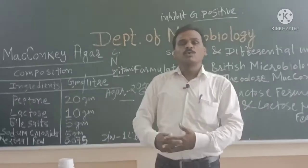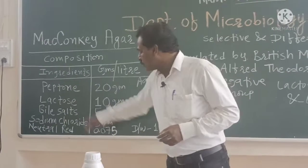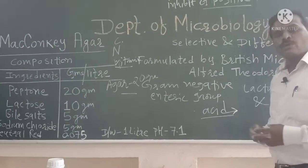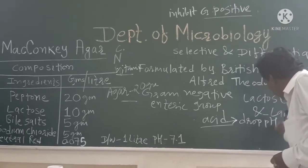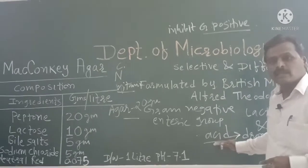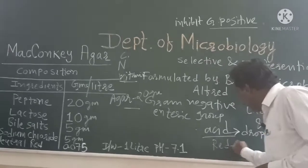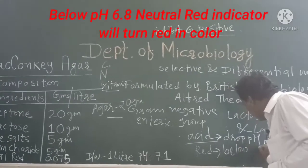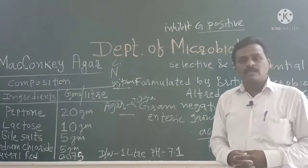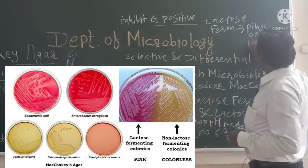When gram-negative bacteria grow onto MacConkey's Agar, lactose fermenter bacteria ferment the sugar lactose, metabolize it, and produce acid. Lactose fermenters produce acid by fermentation of lactose, which drops the pH of the medium. The neutral red pH indicator detects this acid production and turns red in color when the pH drops below 6.8, indicating that acid is produced. The colonies of lactose fermenters appear pink or red in color.